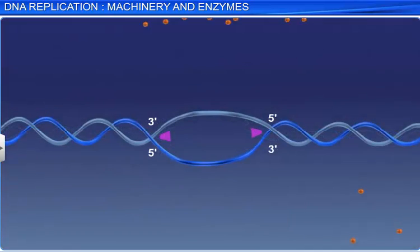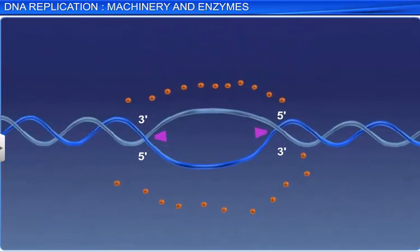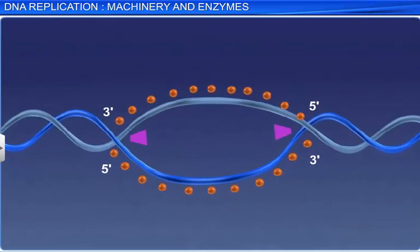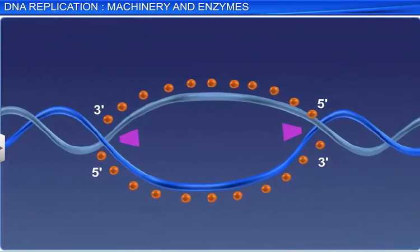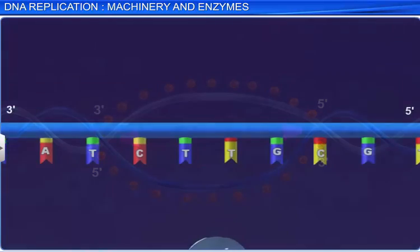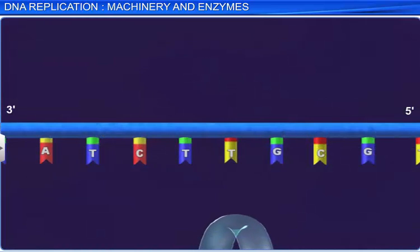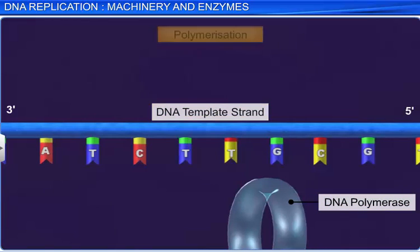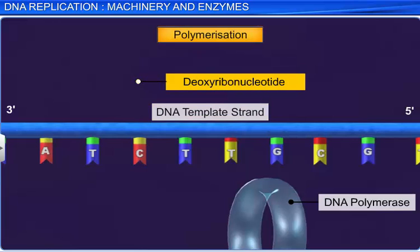However, the main enzyme that catalyzes the replication process, after it begins at the origin of replication, is DNA polymerase, which is said to be DNA dependent as it uses the DNA template to catalyze the polymerization of deoxyribonucleotides.